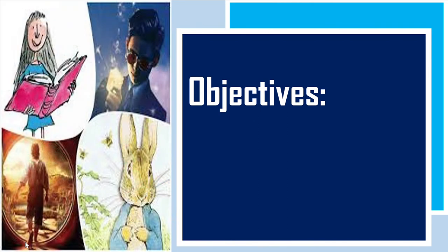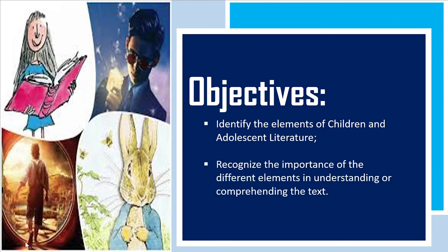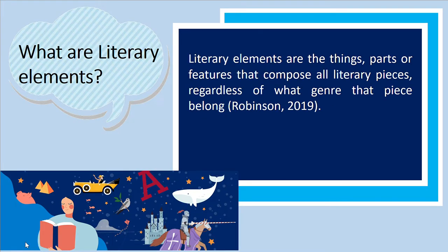For today's topic, our objectives are to identify the elements of children and adolescent literature, and recognize the importance of different elements in understanding or comprehending the text. According to Robinson 2019, literary elements are the things, parts, or features that compose all literary pieces, regardless of what genre that piece belongs to. The elements make up a complete piece that serve as fundamental building blocks of writing, helping us write, read, and understand literature.